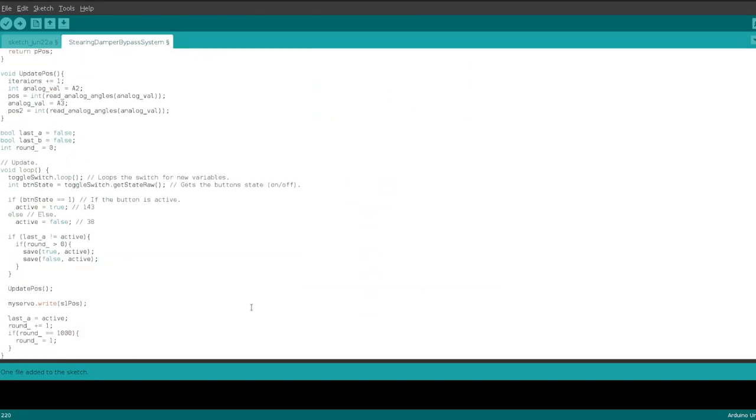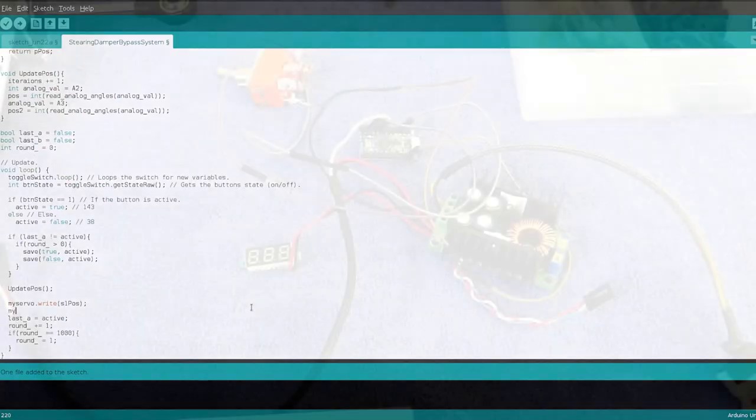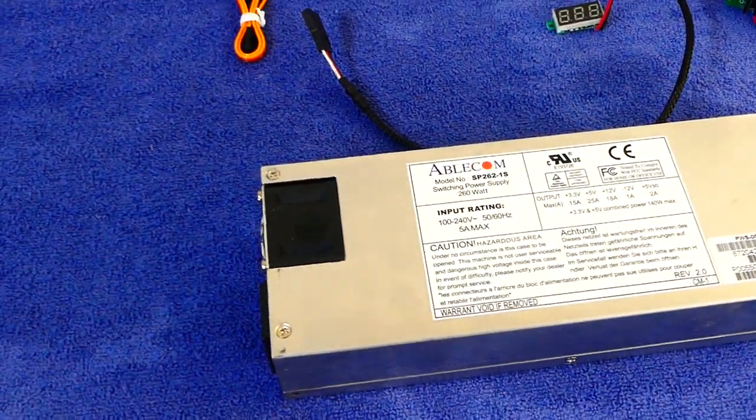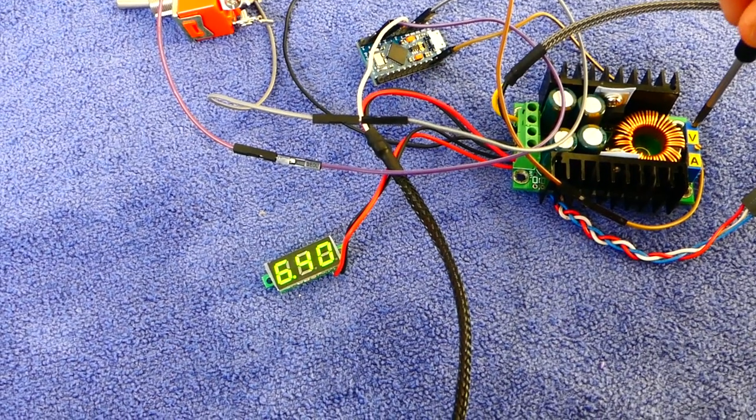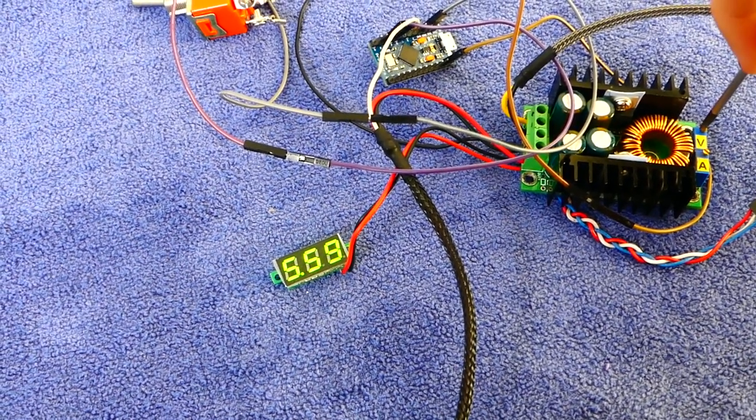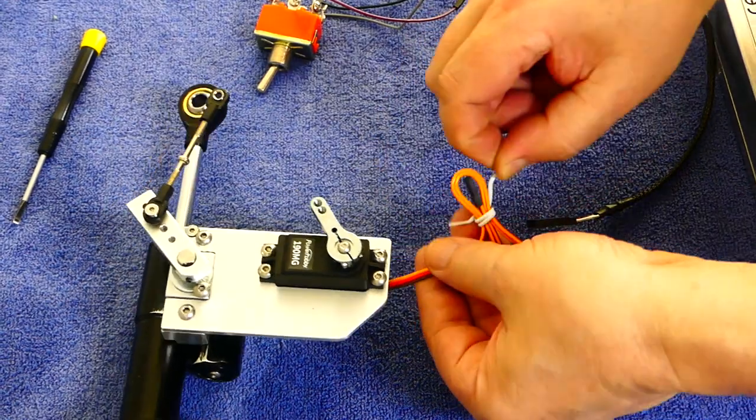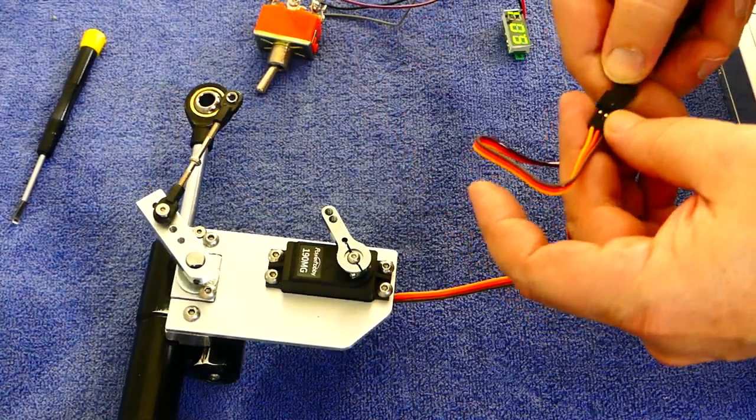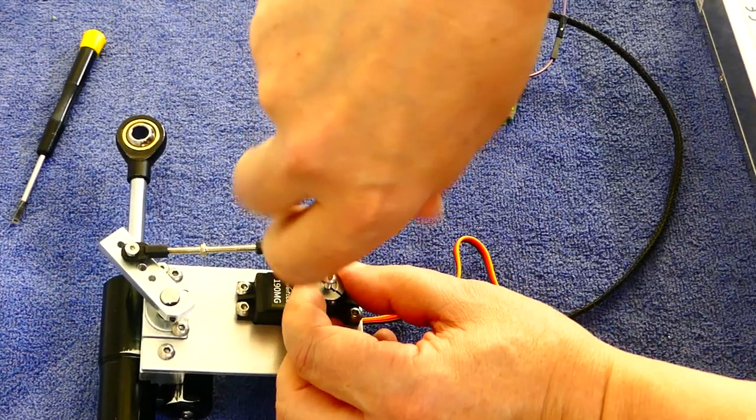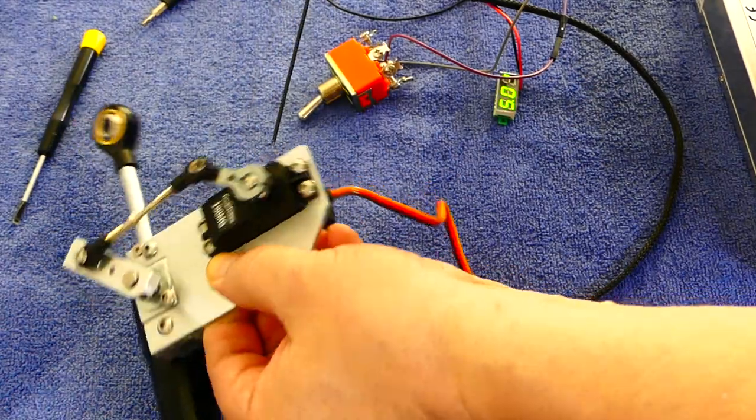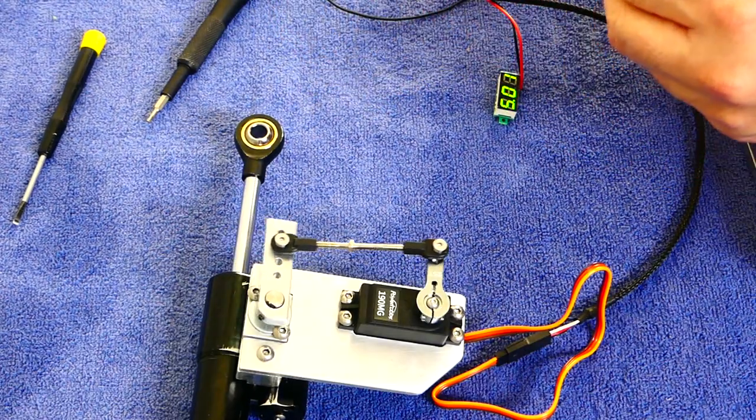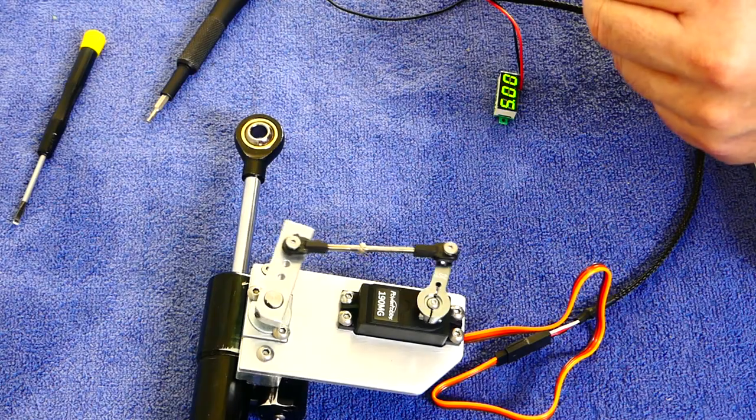Here I'm using a test setup to verify that everything works and make necessary adjustments to the code if needed. The aluminum servo horn came with the servo and, as it rarely happens, was a perfect fit for my setup. A quick test run and all works as intended.